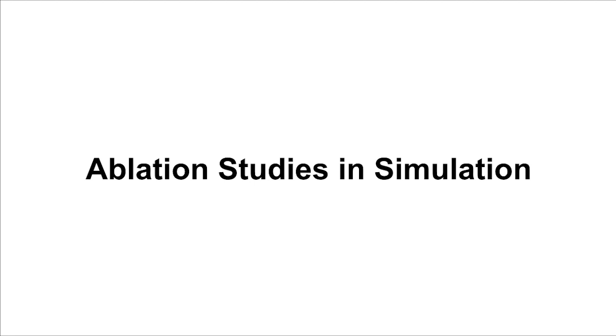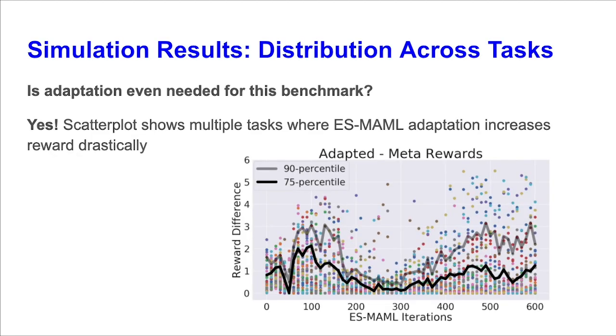In this section, we discuss our ablation studies in simulation. First, we produce a scatter plot where the x-axis is the training iteration in ES-MAML, while the y-axis is the reward difference between the adaptive policy and the meta-policy. Each dot represents one of 50 distinct tasks that the policies are evaluated upon. We show that adaptation is indeed needed for this benchmark, as there are multiple tasks which have high reward difference throughout training.